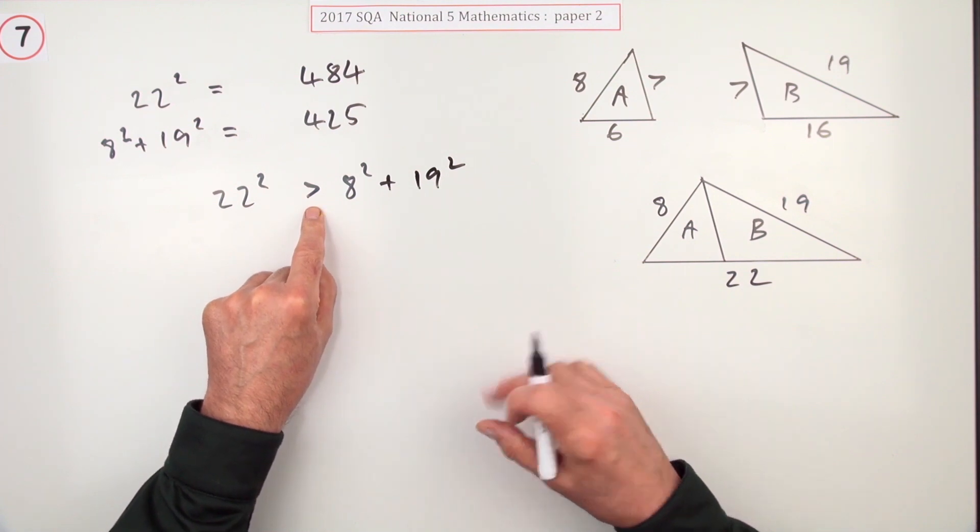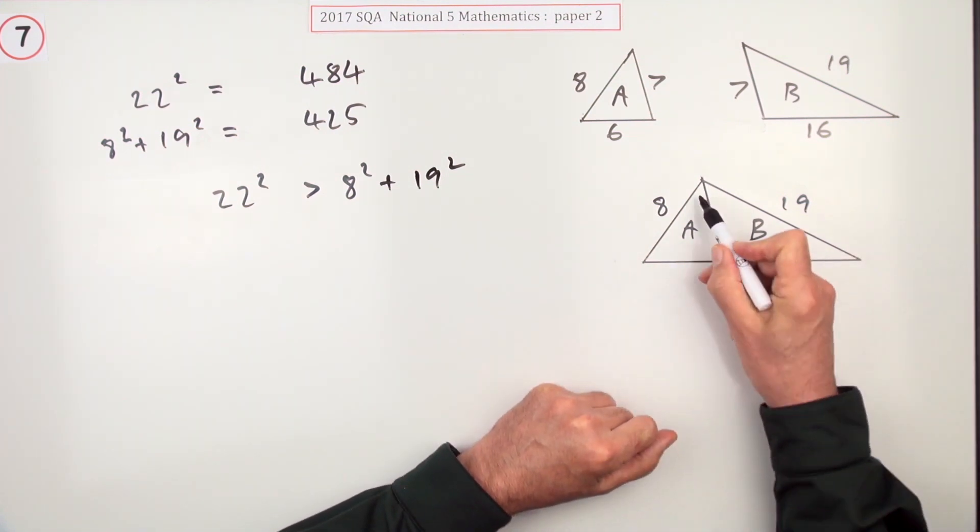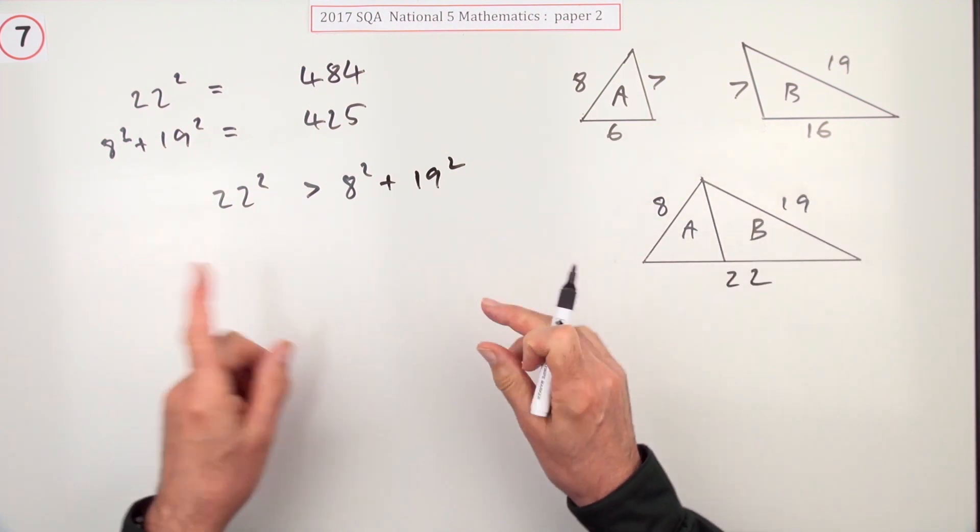Notice it's a greater than, but it doesn't ask for this part. Greater than means it's too big for Pythagoras, so this angle here is actually bigger than 90°. But they don't ask for that.